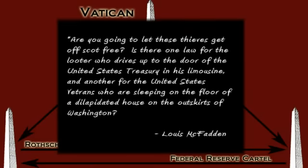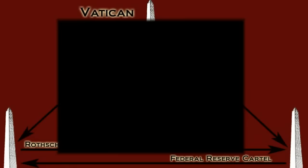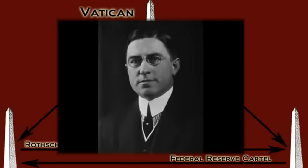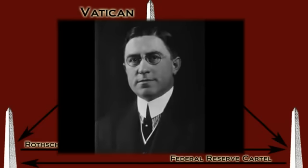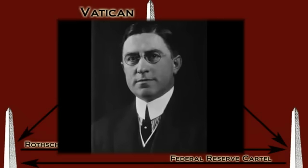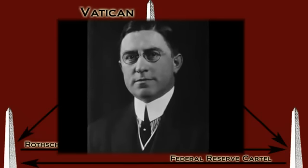'Are you going to let these thieves get off scot-free? Is there one law for the looter who drives up to the door of the United States Treasury in his limousine, and another for the United States veterans who are sleeping on the floor of a dilapidated house on the outskirts of Washington?' Not surprisingly, after two failed attempts, Louis McFadden was assassinated by means of poisoning at a banquet in 1936.